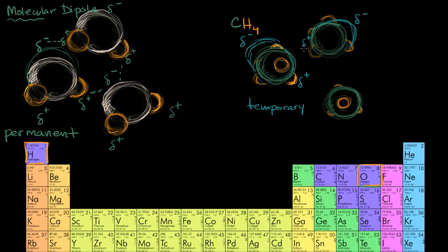Those temporary dipoles can create temporary forces between molecules — the famous London dispersion forces. Right at the moment that one side is partially negative and the other side is partially positive, the electrons might be attracted to each other. And not only could it just be a temporary thing, it could also be induced. If one molecule happens to be in that state and is partially positive on one side, the electrons on a neighboring molecule will be naturally attracted — so it might be an induced dipole.